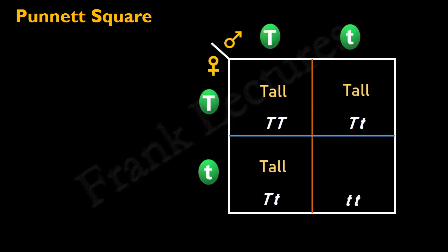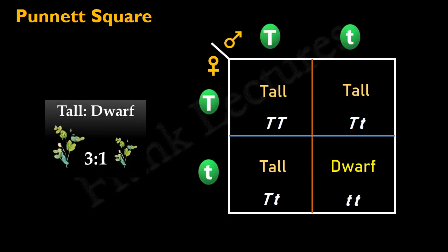This is because the dominant tall allele masks the effect of the recessive dwarf allele. But when two recessive dwarf alleles are present together, the plant will be dwarf. This is because now there is no tall allele to mask the effect of the dwarf allele. Thus, in this cross, there will be three tall plants for every one dwarf plant.